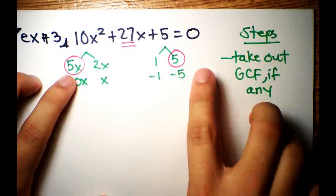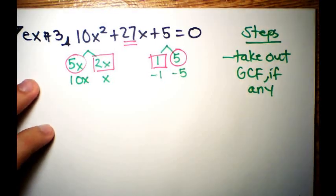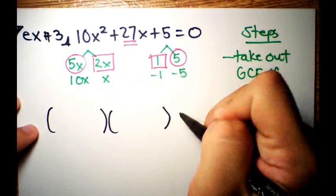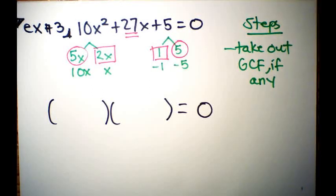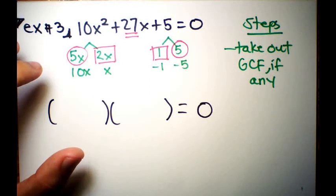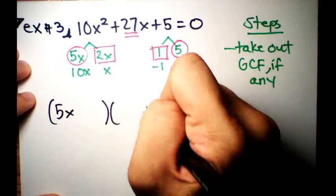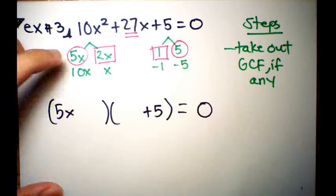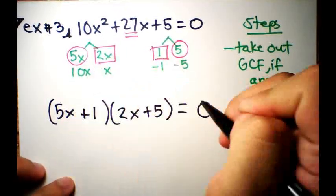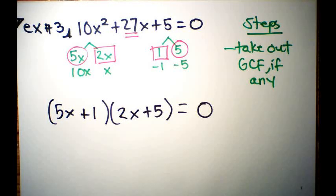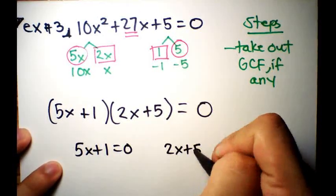Those two pairs link up. For those not in my class, you may have learned a different factoring method — follow that instead. For our class: the first pair goes on the outside giving (5x + 1), and the second pair goes inside giving (2x + 5), so (5x + 1)(2x + 5) = 0.